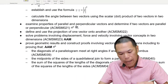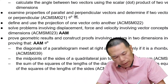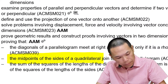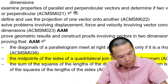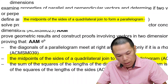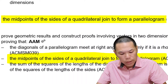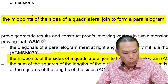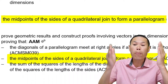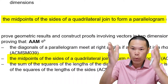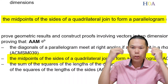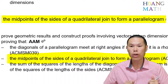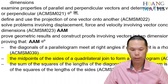So let's unpack this dot point here — the midpoints of the sides of a quadrilateral joining to form a parallelogram. So let me just construct a quadrilateral first.